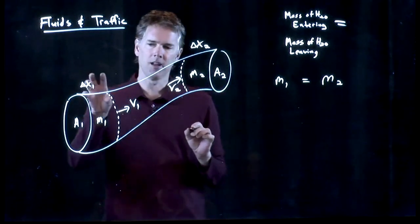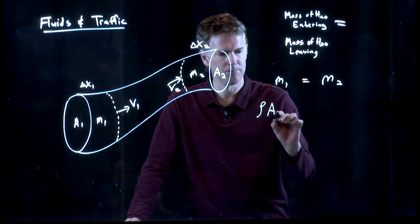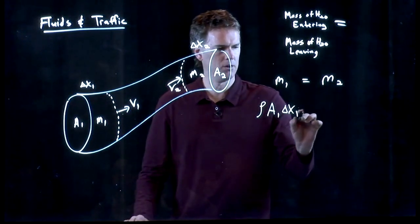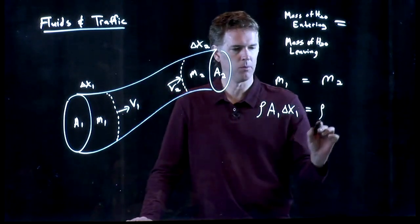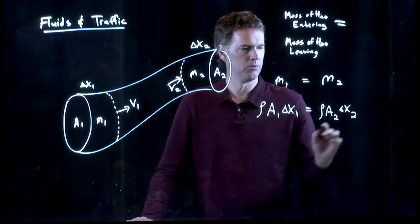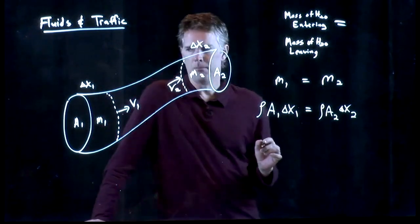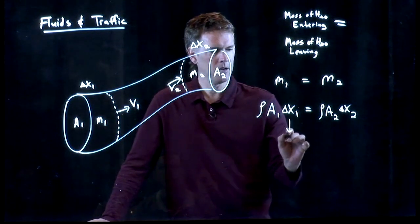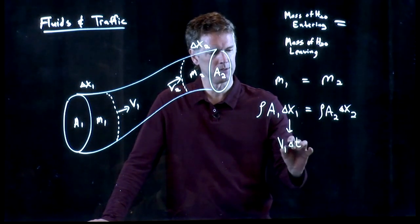M1 is a density times a volume. So this becomes density of the water times the volume of that slab, which is A1 delta X1. The mass of M2 is going to be the density of the water times A2 delta X2, density times volume. But if the water is moving at speed V1, then delta X1 is just V1 times some delta T.